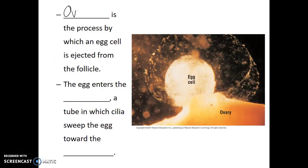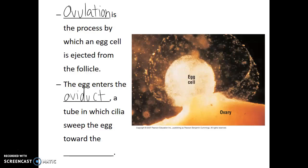Ovulation is the process by which an egg cell is ejected from the follicle. During a woman's reproductive cycle, one or a few of the oocytes will complete the process of meiosis, and once mature, will be released from the ovary during ovulation. Once ovulated, the egg enters the oviduct, which is a tube lined with cilia. Those cilia move and beat, sweeping the egg towards the uterus.